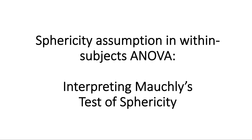Let's start with a very short video and clarification of the sphericity assumption within subjects in ANOVA. This is sort of a little bit of an expansion on what we talked about in class in interpreting Mauchly's test of sphericity. This is a tough concept to wrap your head around. It's even tougher to teach, because there's so much going on that trying to verbally explain what happens with this test is challenging.